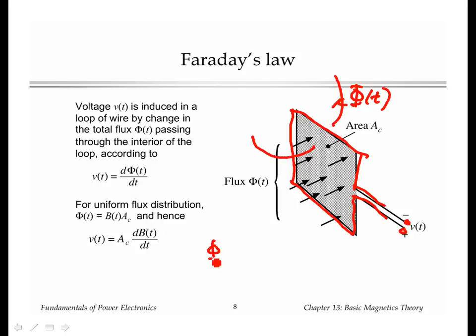Since flux, if the flux is uniform, we can say the total flux is the flux density times the area of the loop. We have some total cross-sectional area here. So we can substitute this and get that the total voltage induced is the area of the loop times the derivative of the flux density.